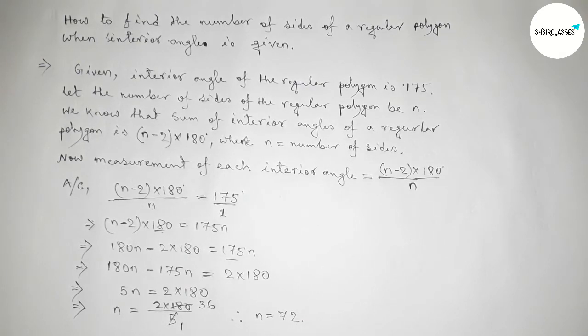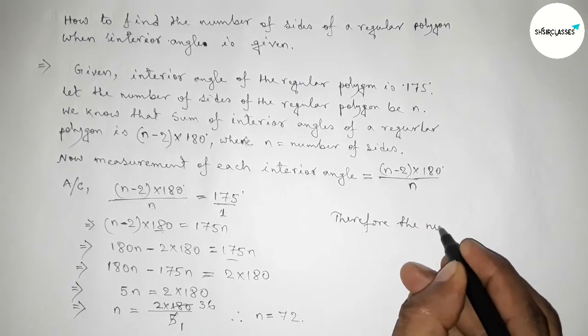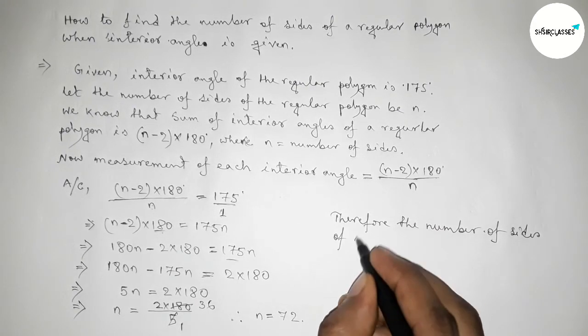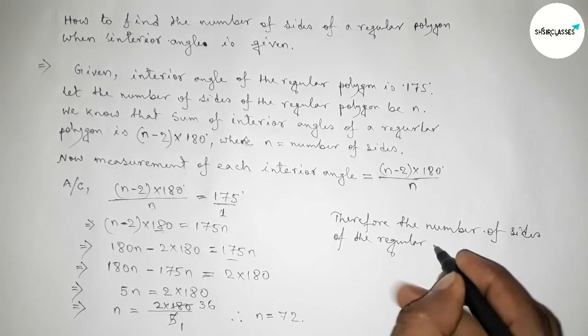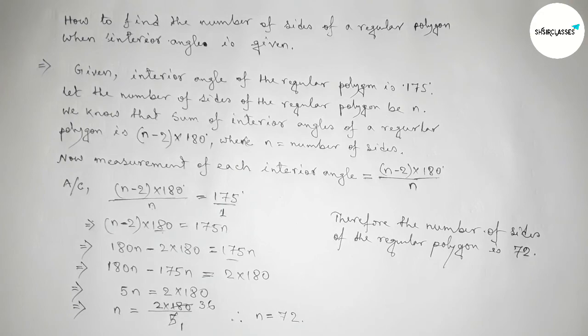Therefore, the number of sides of a regular polygon equals 72 where the interior angle of the regular polygon equals 175 degrees. That's all. Thanks for watching.